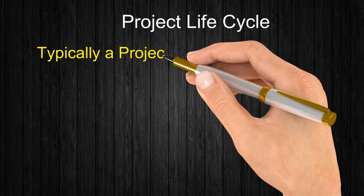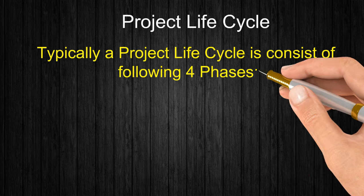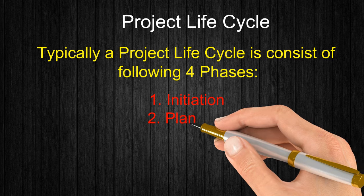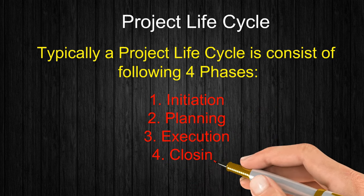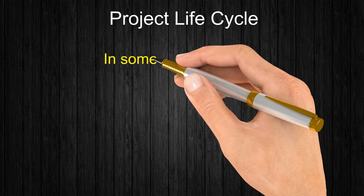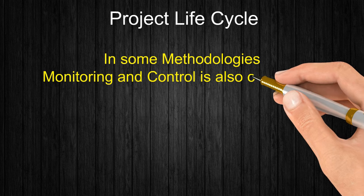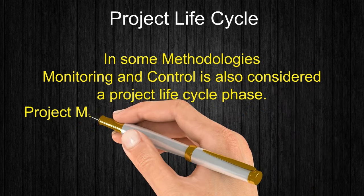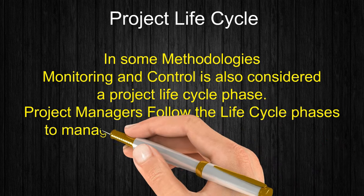Typically a project life cycle consists of the following four phases: initiation, planning, execution, and closing. In some methodologies, monitoring and control is also considered a project life cycle phase. Project managers follow the life cycle phases to manage any project from start to finish.